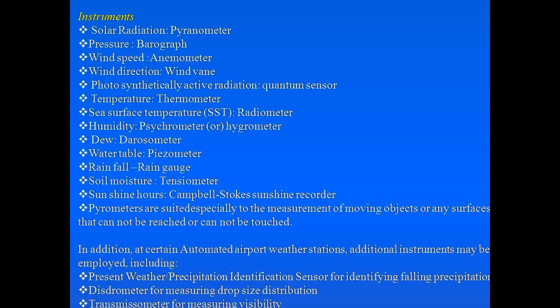By measuring soil moisture using a tensiometer, we can plan irrigation for crops. By measuring rainfall with a rain gauge, we know the rainfall for a given day or period. For groundwater table, we use a piezometer. For sea surface temperature, we use a radiometer — which is a satellite sensor. Photosynthetically active radiation uses a quantum sensor. Wind direction (e.g., northeast, southwest) uses a wind vane; wind speed uses an anemometer with four cups; pressure uses a barograph.